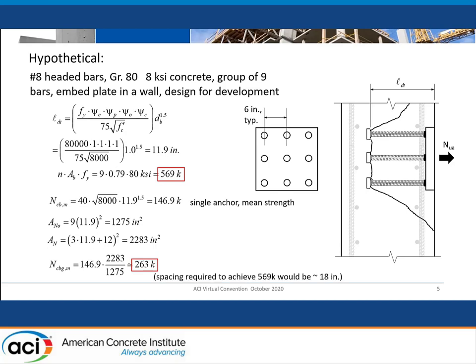Even if you have a lot of additional reinforcing in the wall, even using that K of 40, it's unlikely that you're going to make up that gulf. So from where I sit, if you have a connection like this and you don't calculate a breakout for its design, you've made a big mistake. But I don't believe the code would tell you that you have to do that.